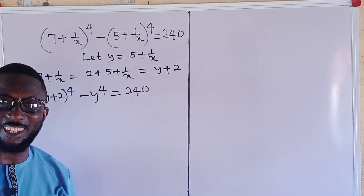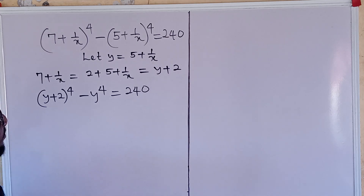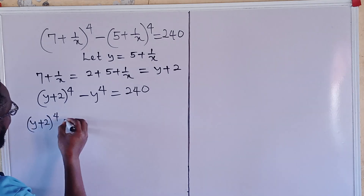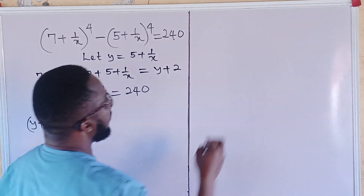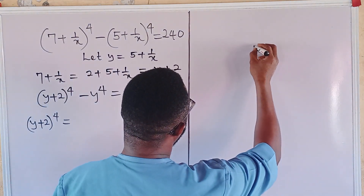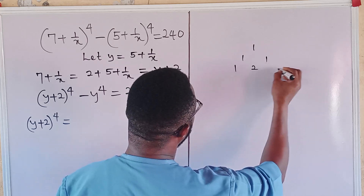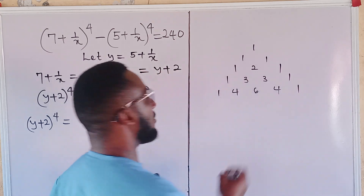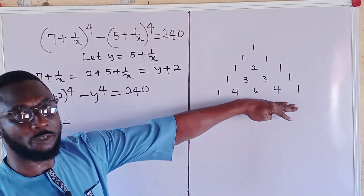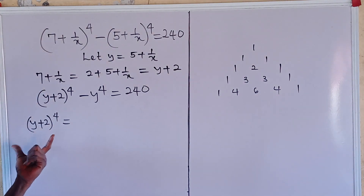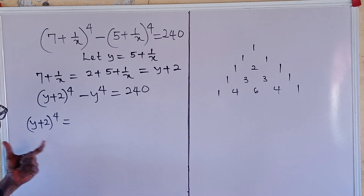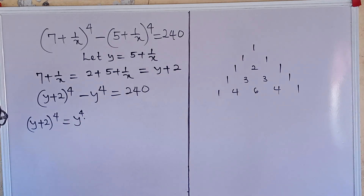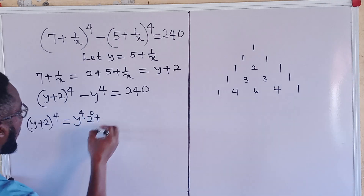We can see what we are doing — simplifying this problem in its best possible form. We shall now take care of this expansion. For (y + 2)^4, I shall use Pascal's triangle expansion. The Pascal coefficients for power of four are: 1, 4, 6, 4, 1.